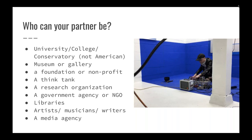Who can your partner be? Your partner can be many different things. Probably the most common is a university, college, or conservatory in the case of the arts. The catch is it should not be an American university simply located in a different country — it needs to actually be a domestic institution to that country. Museums or galleries are good options, as are foundations, non-profits, think tanks, research organizations, government agencies, NGOs, and libraries. Because most of us are artists, you can also get a letter of support from an individual artist, musician, or writer. A media agency could also be a suitable partner.